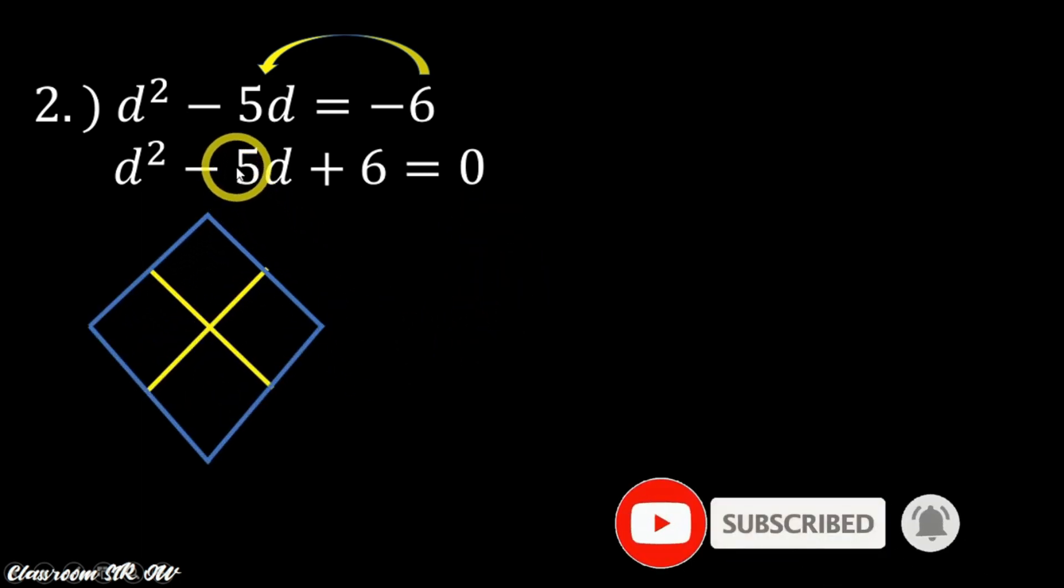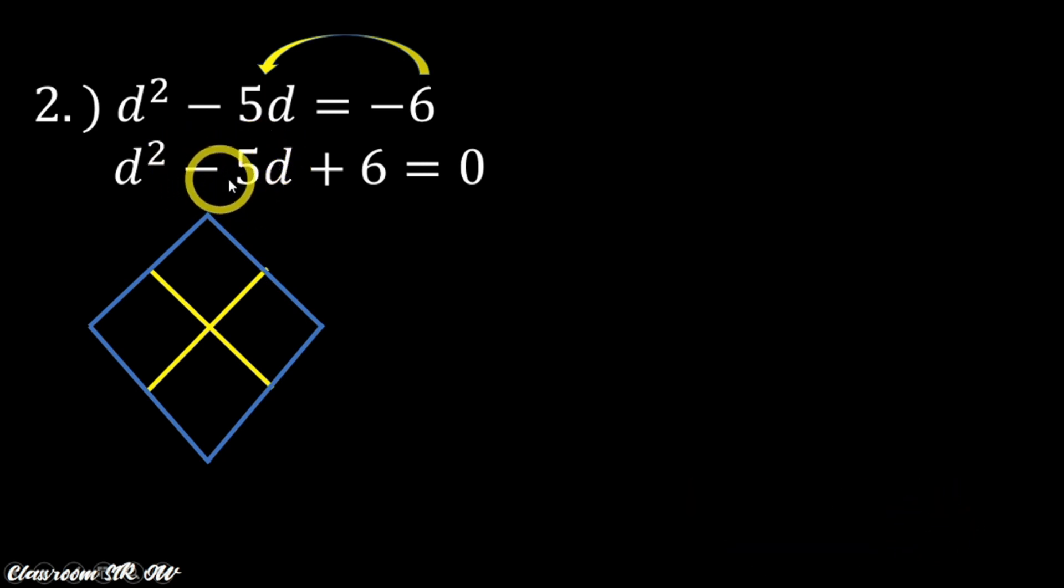So this time we can now apply our diamond method. So the same as usual, the coefficient of the middle term which is -5, that is placed at the top of our diamond, and the last term which is 6 as a constant is at the bottom. So we will now look for the product and the sum. So we look for two factors in such a way that the product is 6 and the sum is -5.